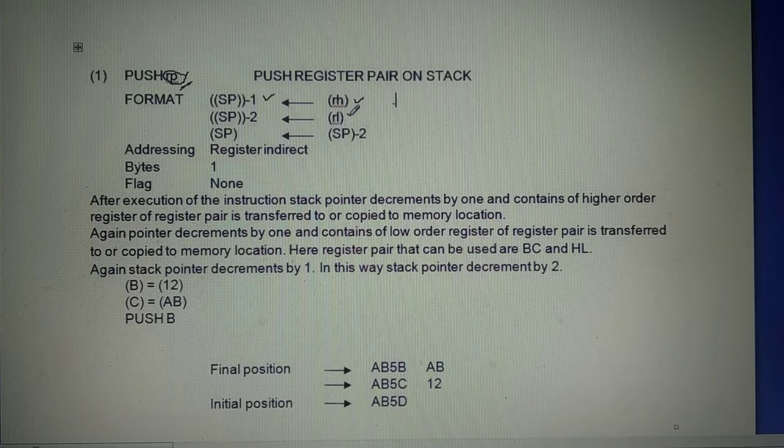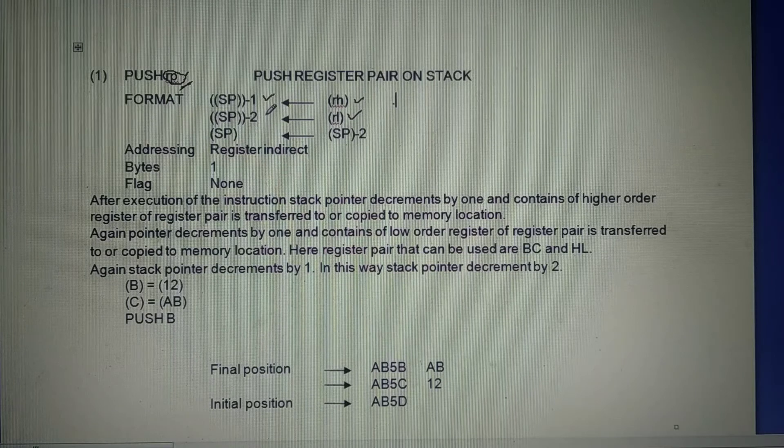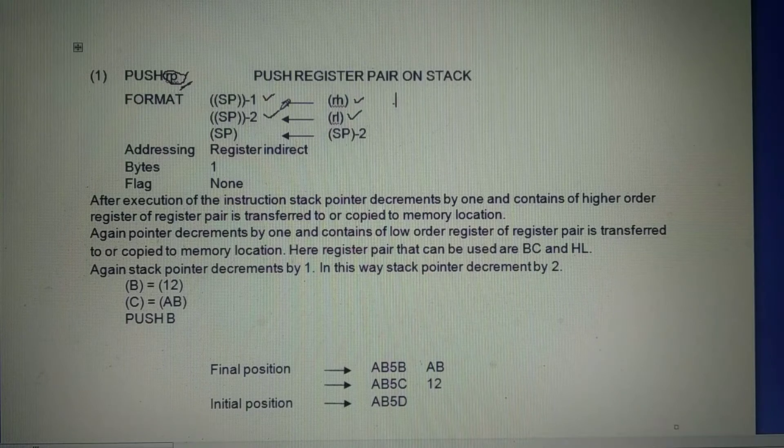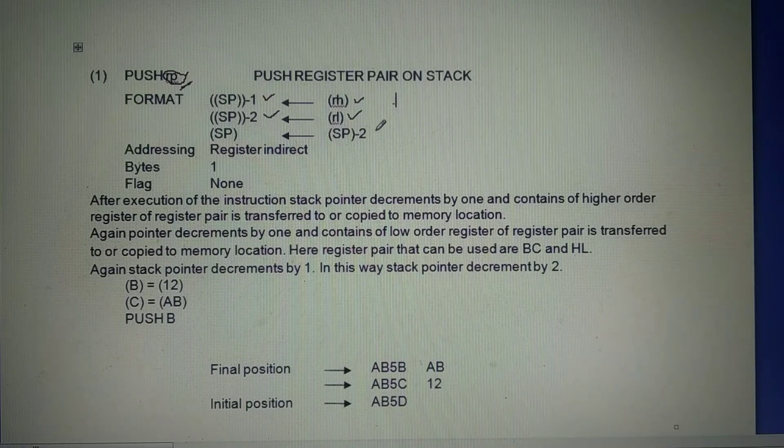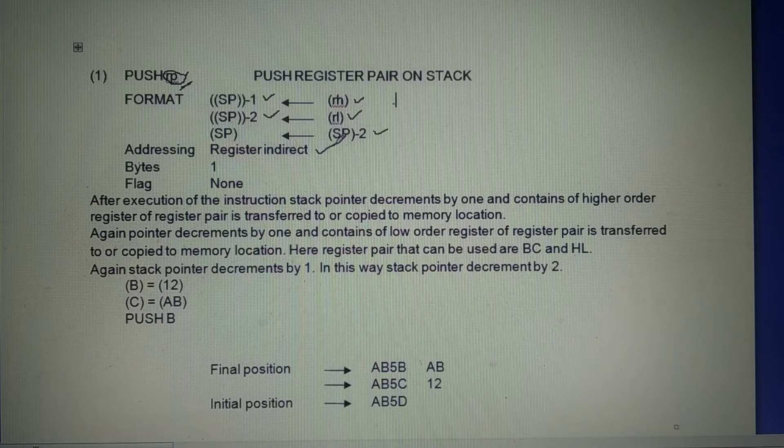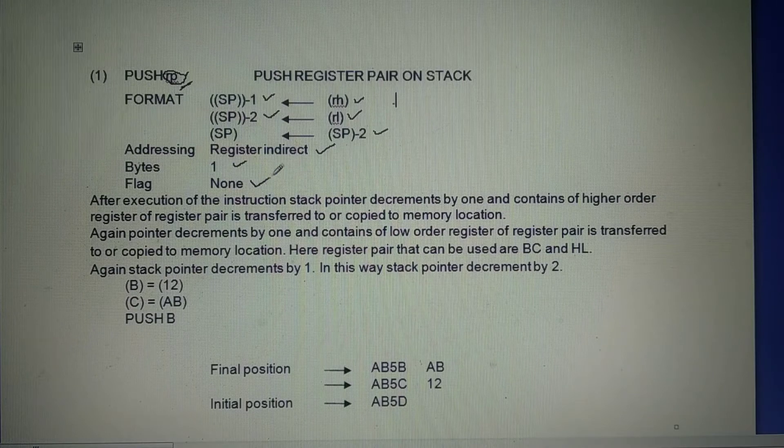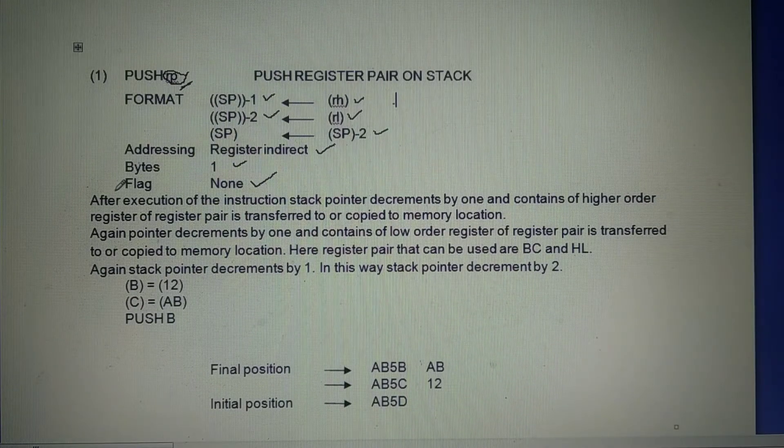And content of low-order register of register pair is stored in memory location which is two less than memory indicated by stack. In this way, the stack pointer in this operation decrements by two. The addressing mode is register indirect. This is one byte instruction and flags affected none.